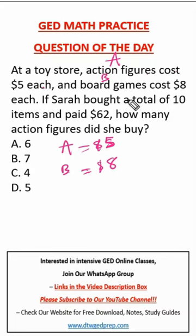if Sarah bought a total of 10 items, a total of 10 items, that is action figures and board game. So that means A plus B is equal to 10, total of 10 items.